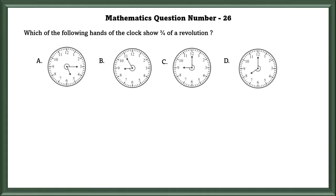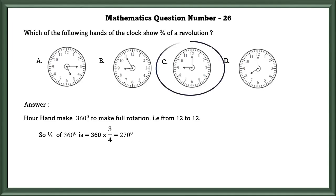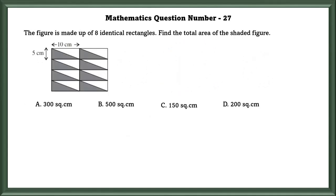Mathematics question number 26: Which of the following hands of the clock shows 3/4 of a revolution? One complete revolution equals 360 degrees, and 3/4 of 360 equals 270 degrees. Option C shows 270 degrees.